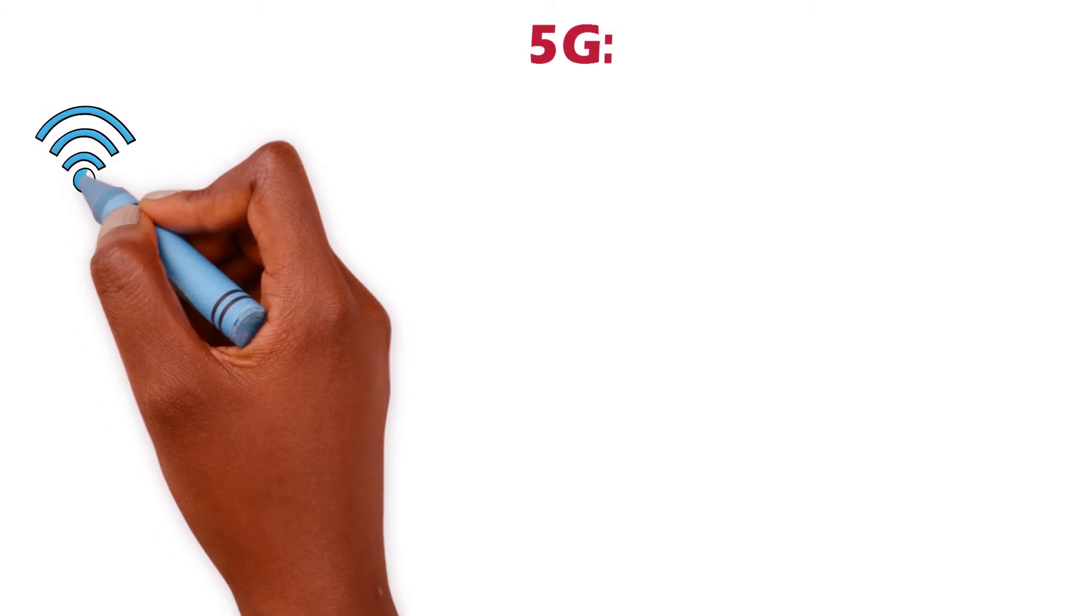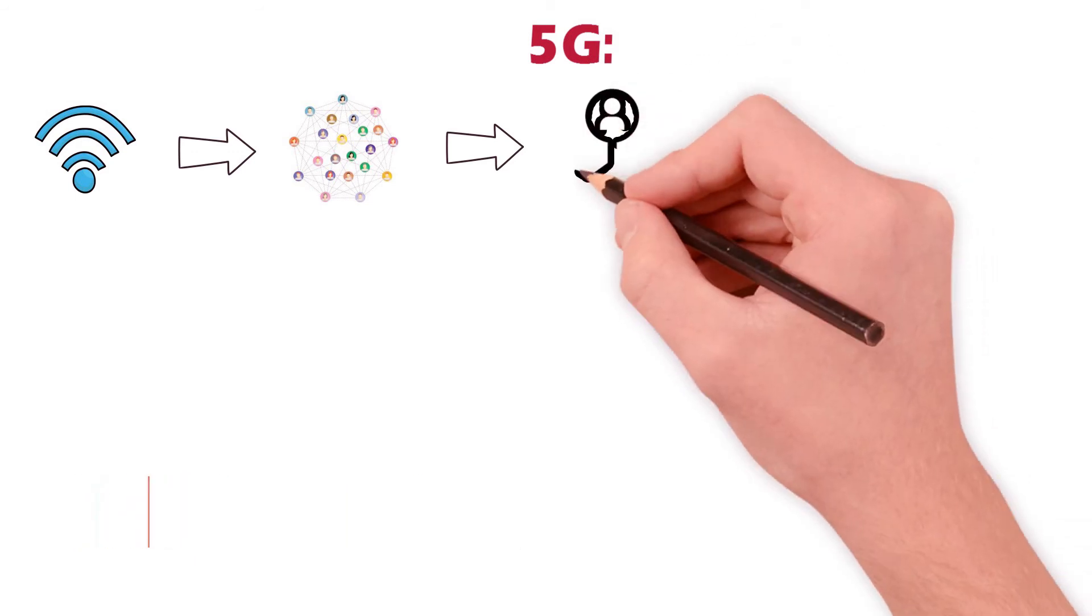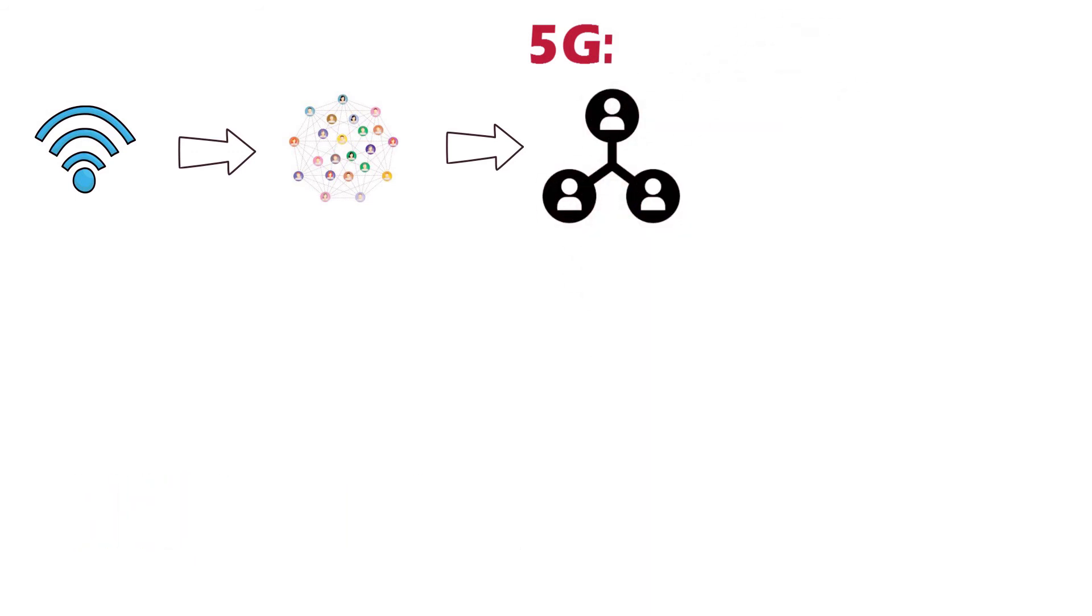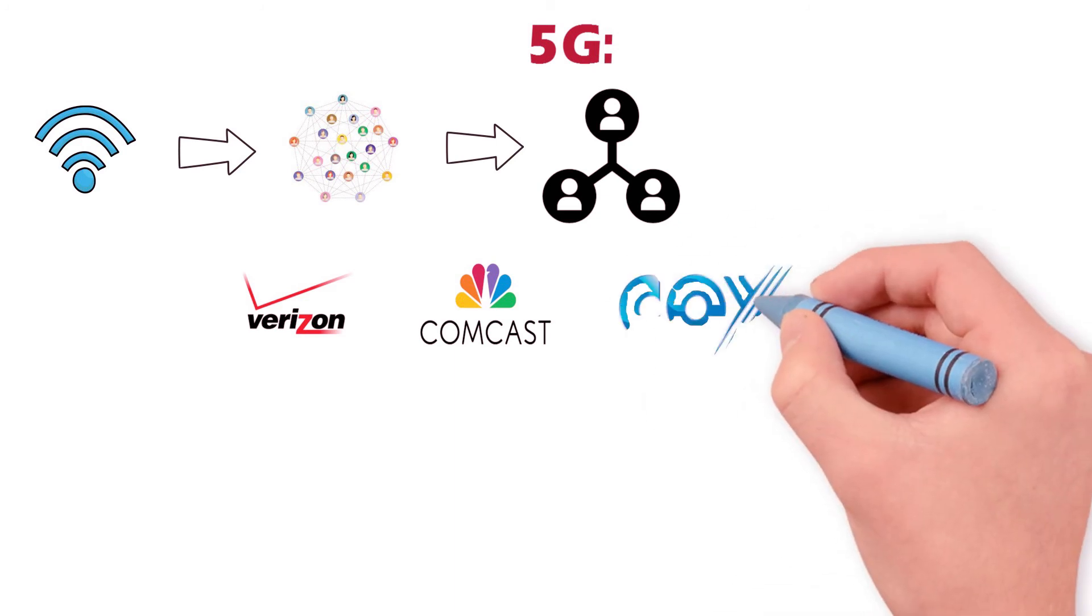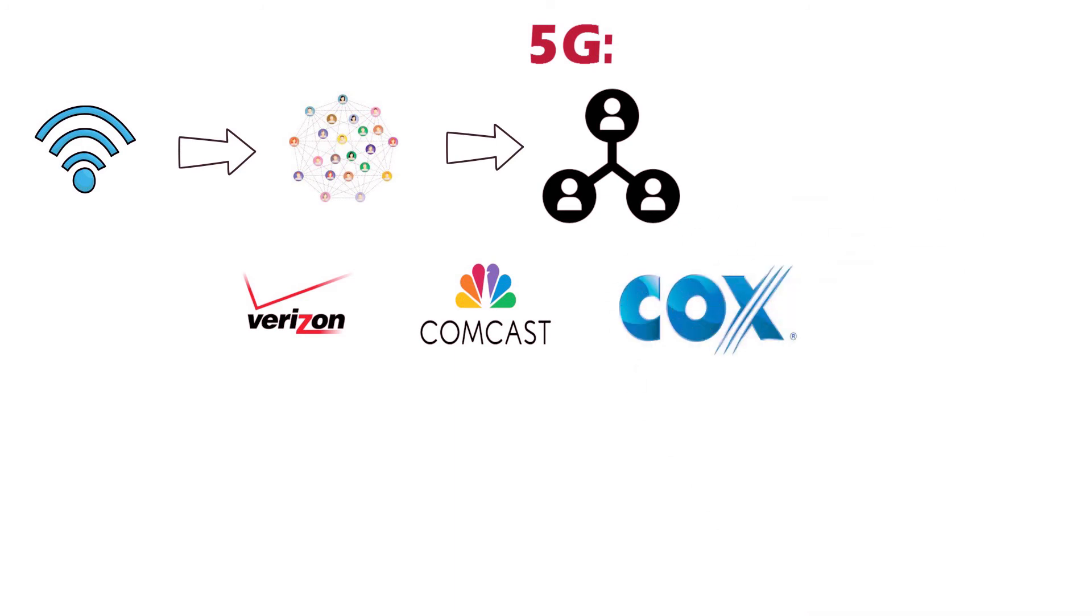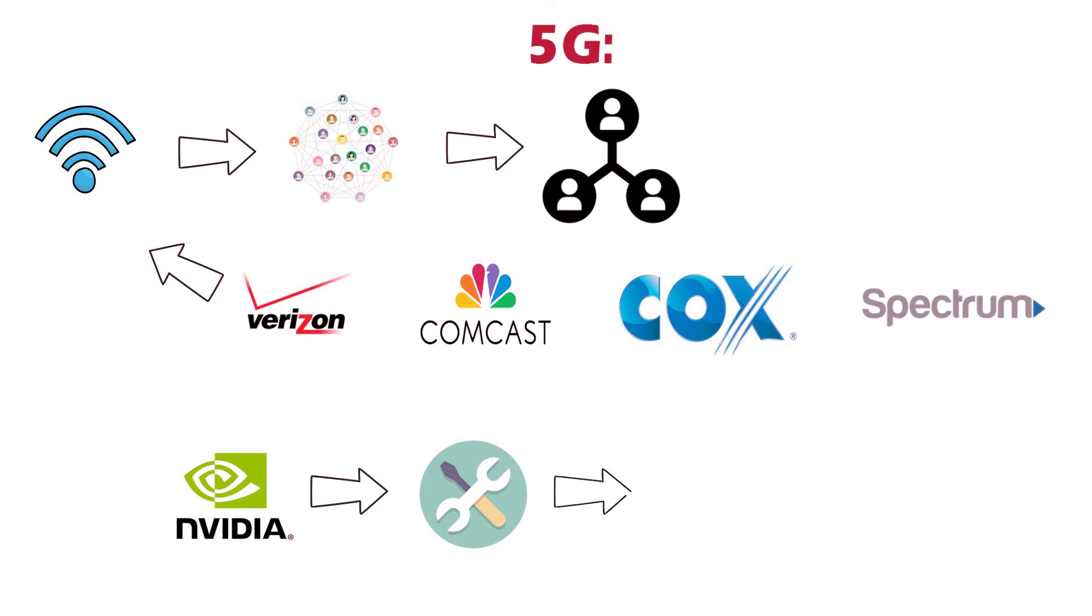5G is the fifth generation wireless network for digital cellular networks that began deployment in late 2019. As with past standards, the covered areas are divided into regions called cells, serviced by individual antennas. Virtually every major telecommunication service provider in the developed world is deploying antennas or intends to deploy them soon. In October 2019, NVIDIA unveiled Aerial, a software development kit for telecom operators building 5G wireless radio access networks. Aerial helps telecommunication companies and 5G networks optimize wireless networks and AI models running at the edge.